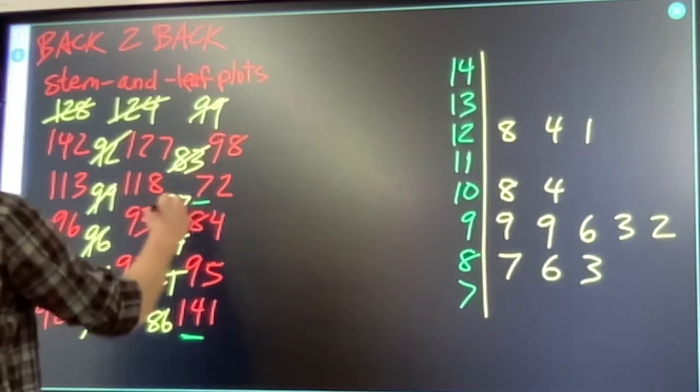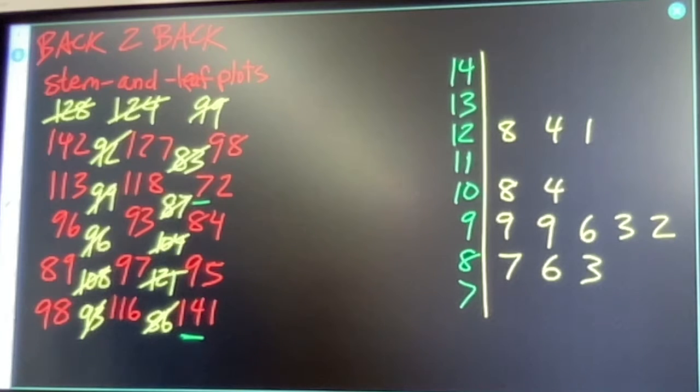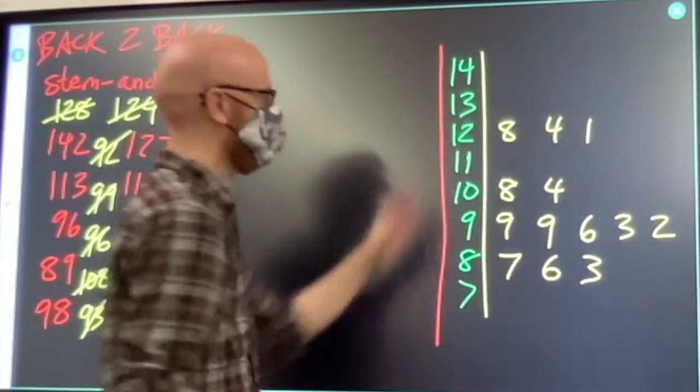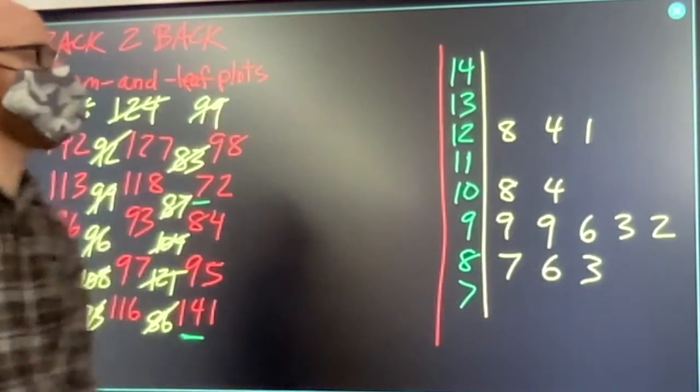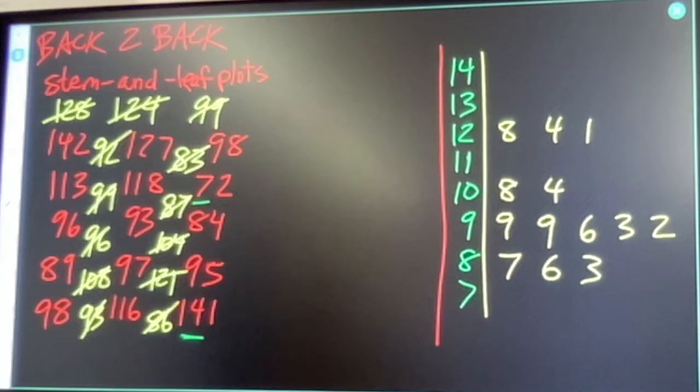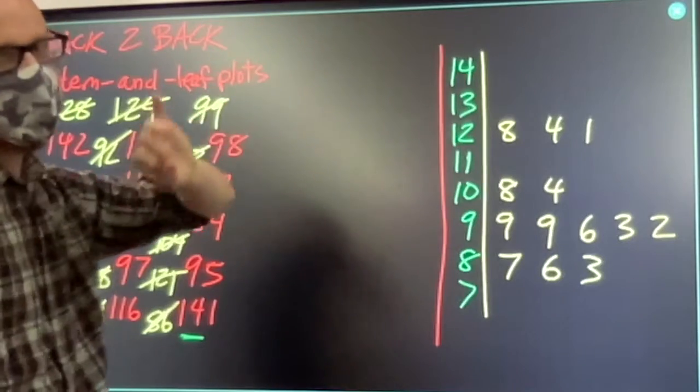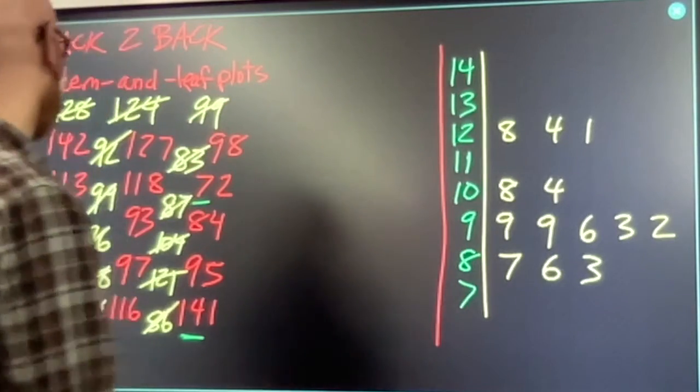Back to back means I'm going to do the same thing for my red numbers, but backwards. Facing this direction. So, it means that my red numbers are going to be read backwards, kind of from right to left.